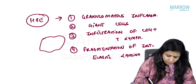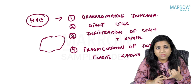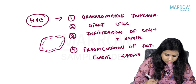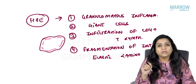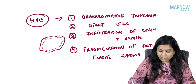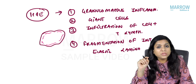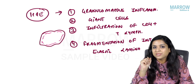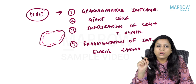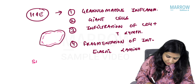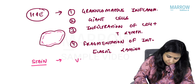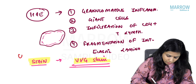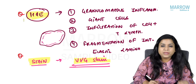In the vessel wall, the internal elastic lamina is fragmented or broken. Fragmentation of the internal elastic lamina is a feature of giant cell arteritis. To see this fragmentation, we use the Verhoff-Van Gieson (VVG) stain, which is the stain for elastic fibers. All these microscopic points are exam questions.